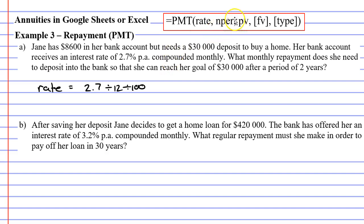Next, we need to know the number of time periods. She wants to save up her deposit after a period of two years. So NPER, the number of time periods, is 2 times 12 since we're doing this monthly. 2 times 12 is 24 time periods.